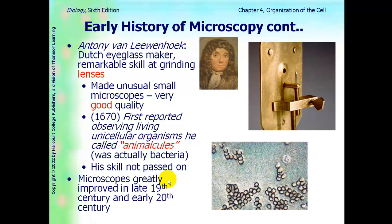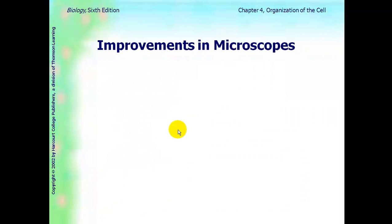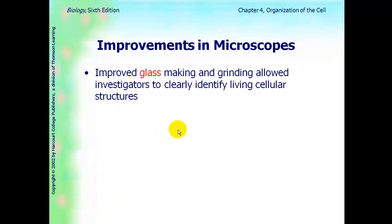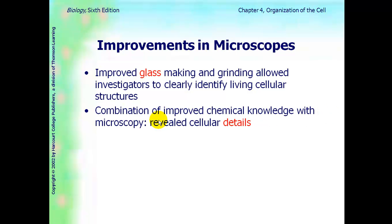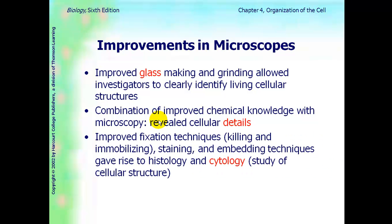Microscopes did improve in the late 19th century and early 20th century. Improvements in microscopes have come about because of improvement in glass making and grinding. Combining that with chemical knowledge and allowed us to see cellular details. We also got better at fixation techniques of immobilizing and killing organisms, staining them, and that allowed us to now study histology and cytology.